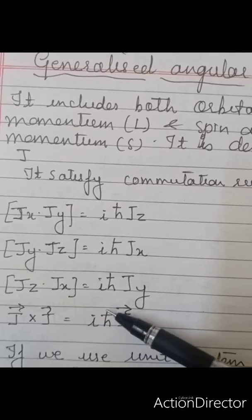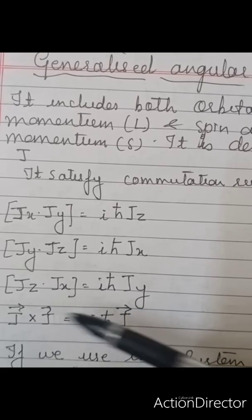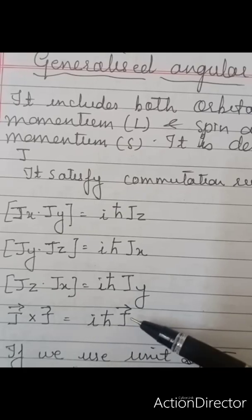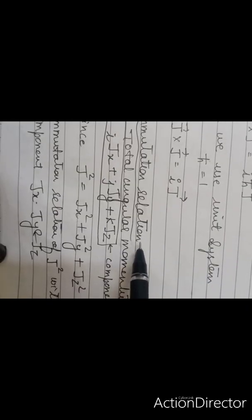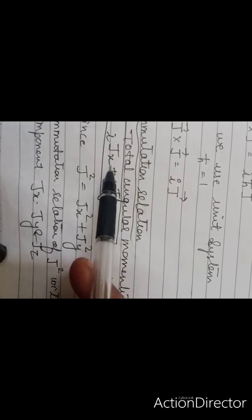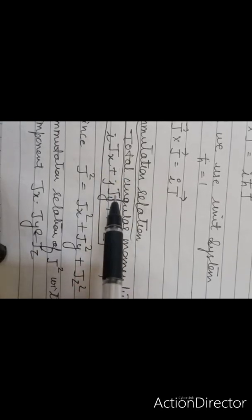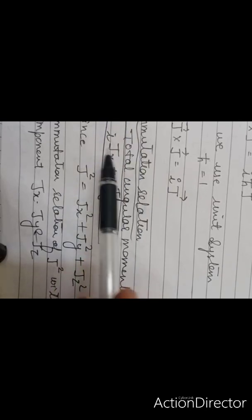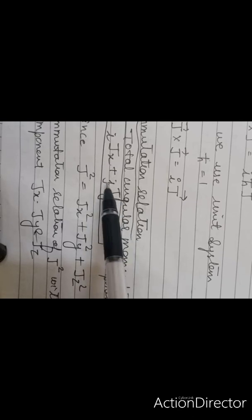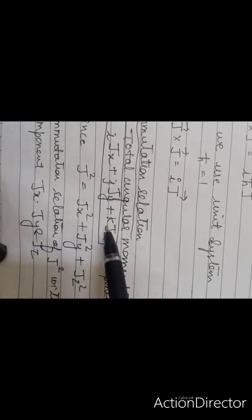If we are taking a unit vector system, ℏ cut will be 1. So J into J will be nothing but iJ. Now here we will be applying the commutation relation. The total angular momentum in terms of IJK is: J vector equals i JX plus j JY and k JZ.